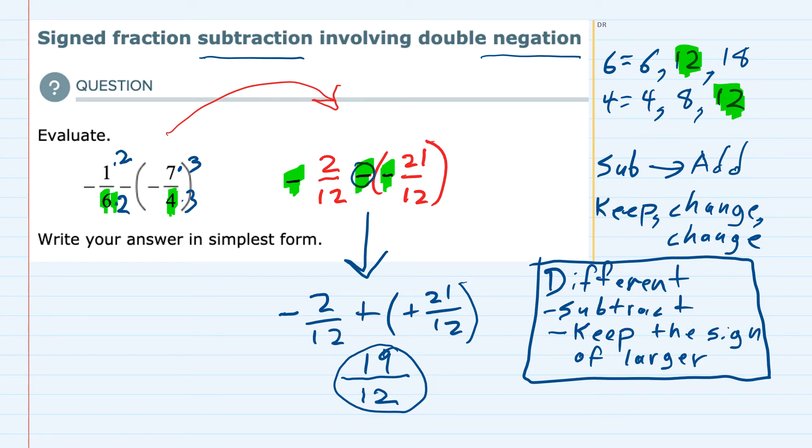It is improper. And if we wanted to make it a proper fraction, I could divide the denominator, 12, into the numerator, 19. And 12 goes into 19 once. When I subtract the 12, my remainder is 7. So 1 and 7 twelfths.